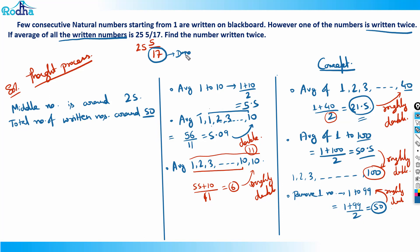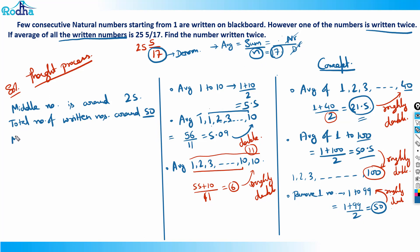Since average = sum/n, and after cancellation the denominator is 17, the total number of numbers must be a multiple of 17. We need a multiple of 17 that is around 50. The only multiple of 17 near 50 is 51 (17×3). So the total number of written numbers is 51.